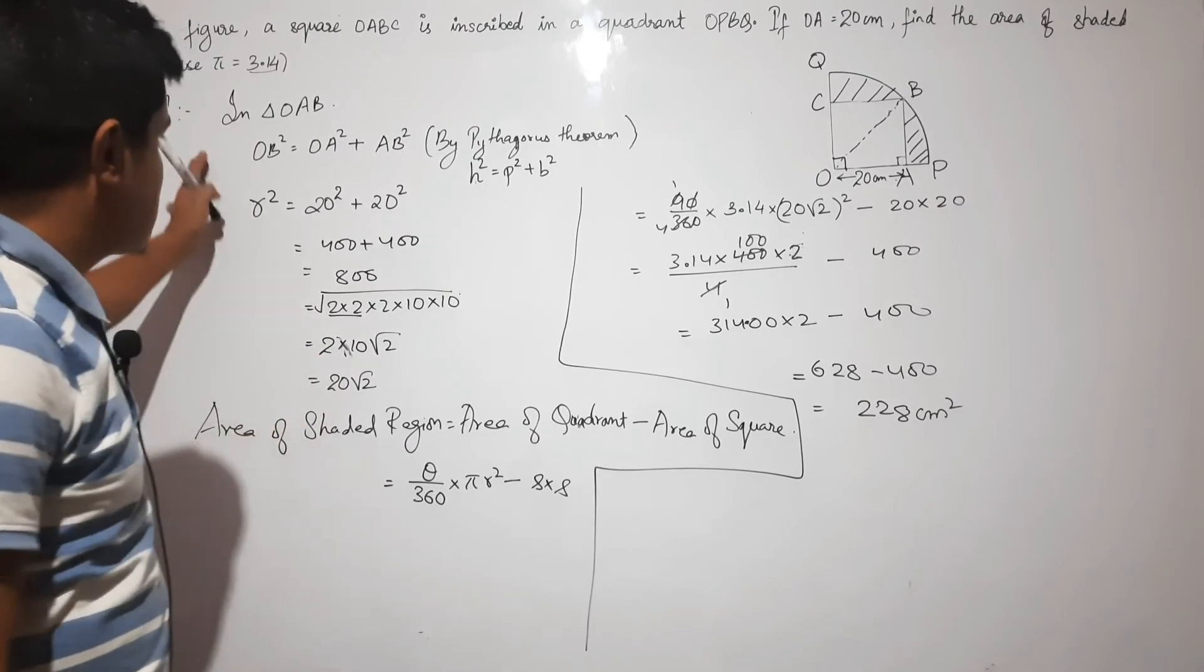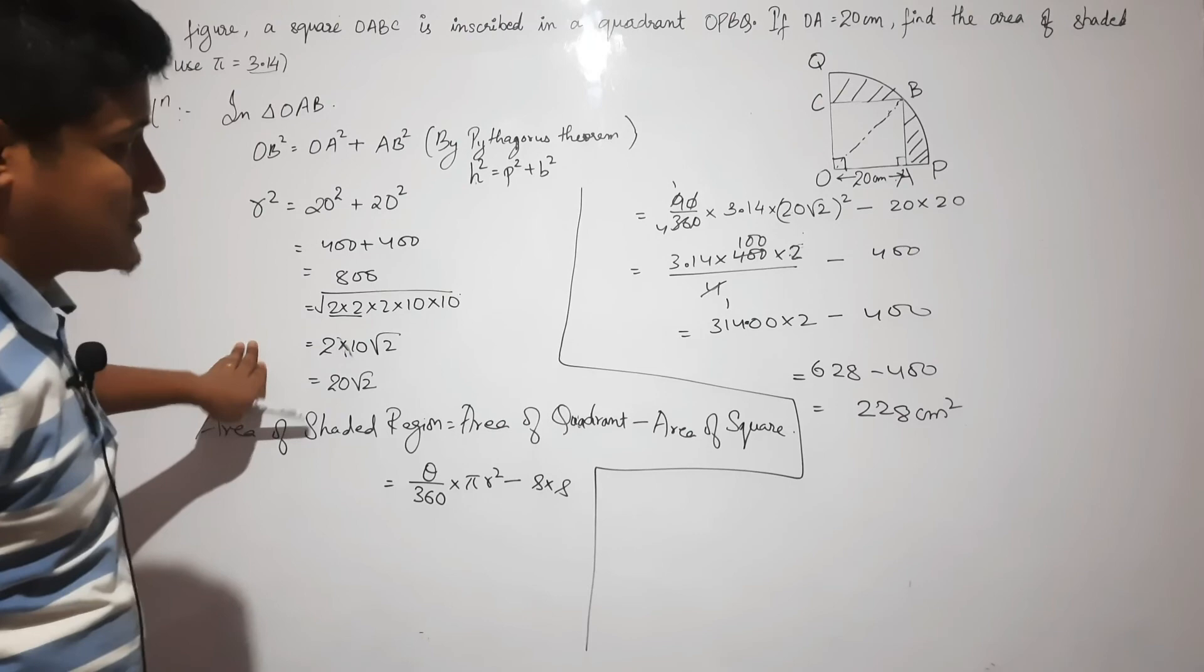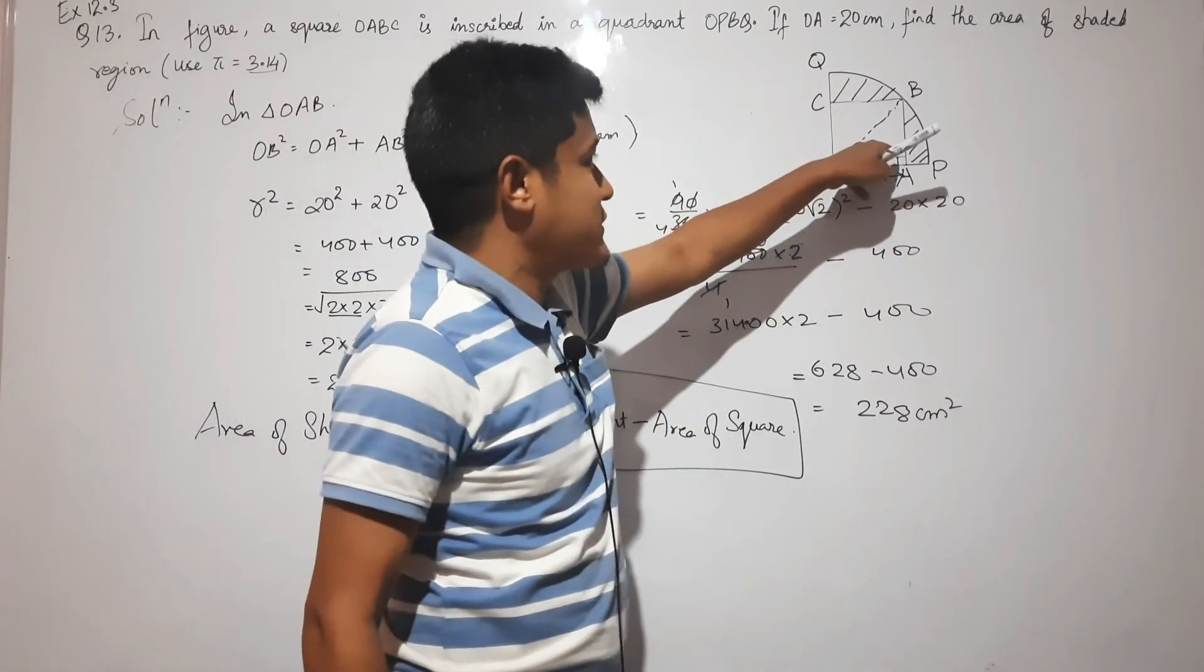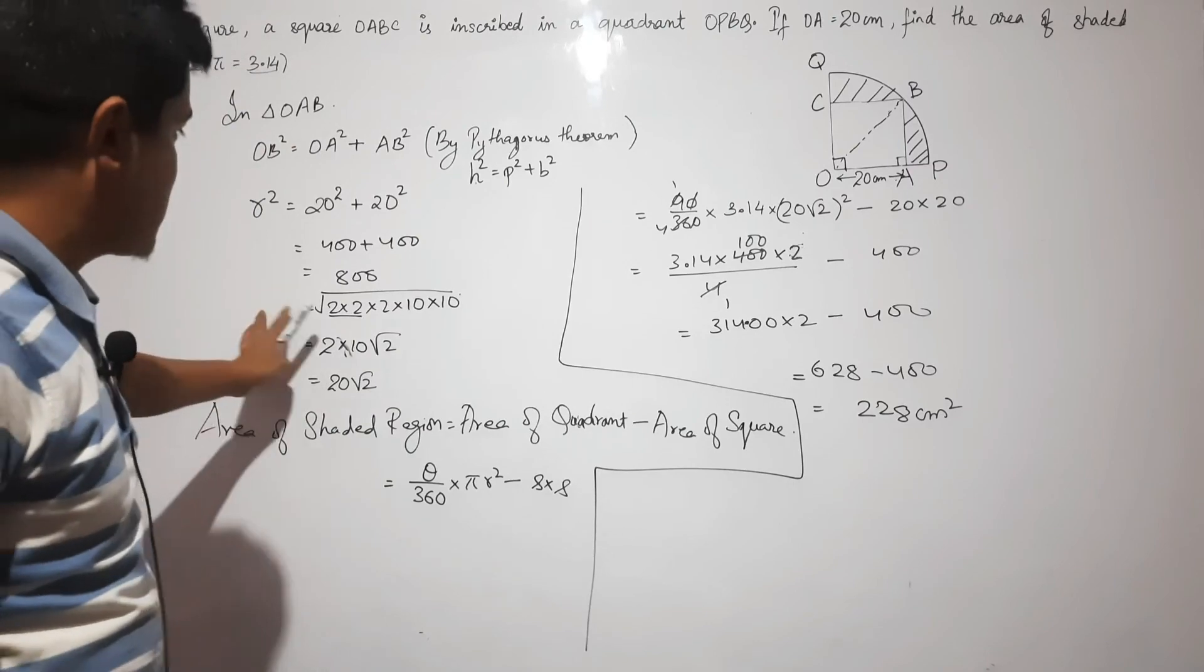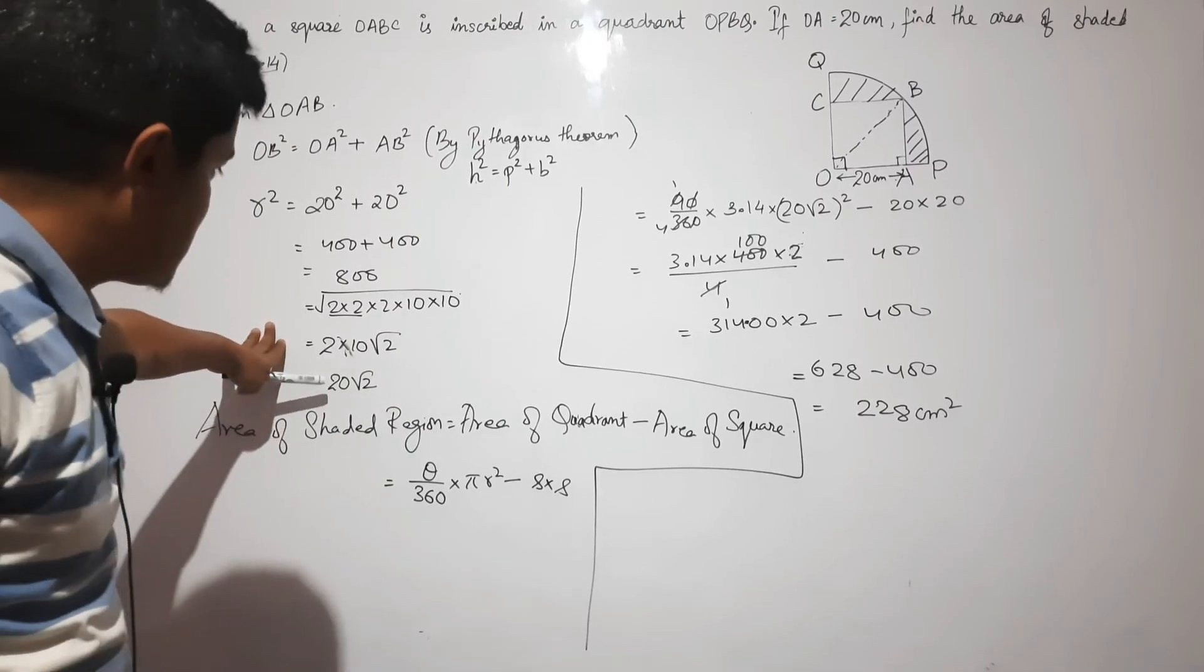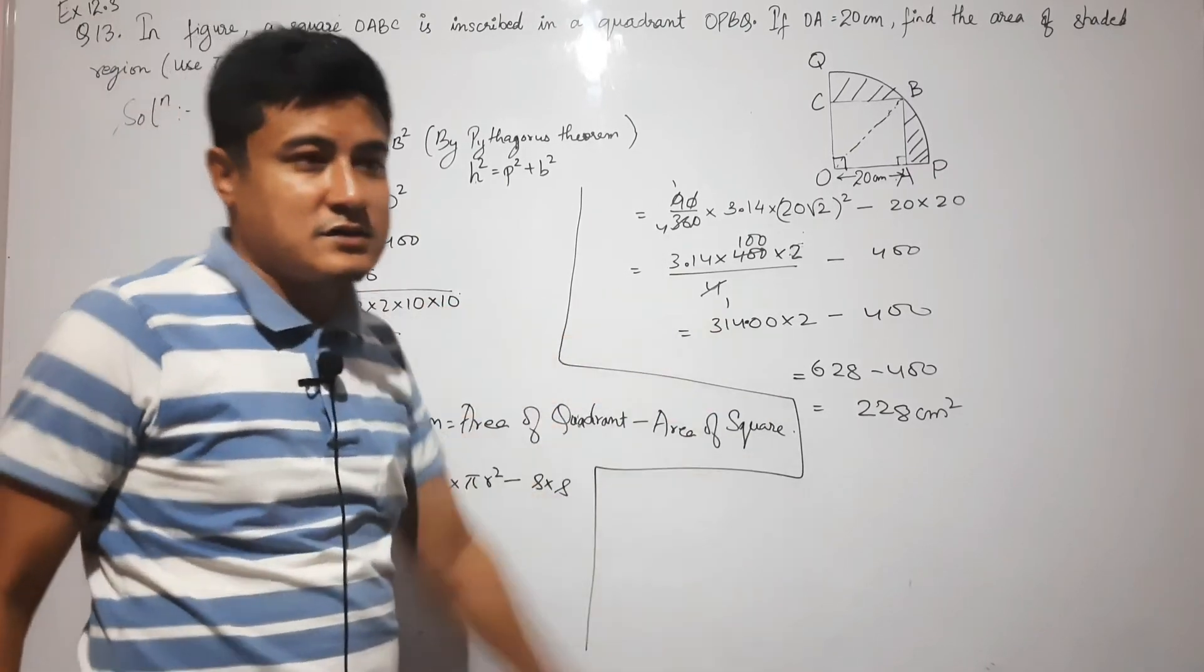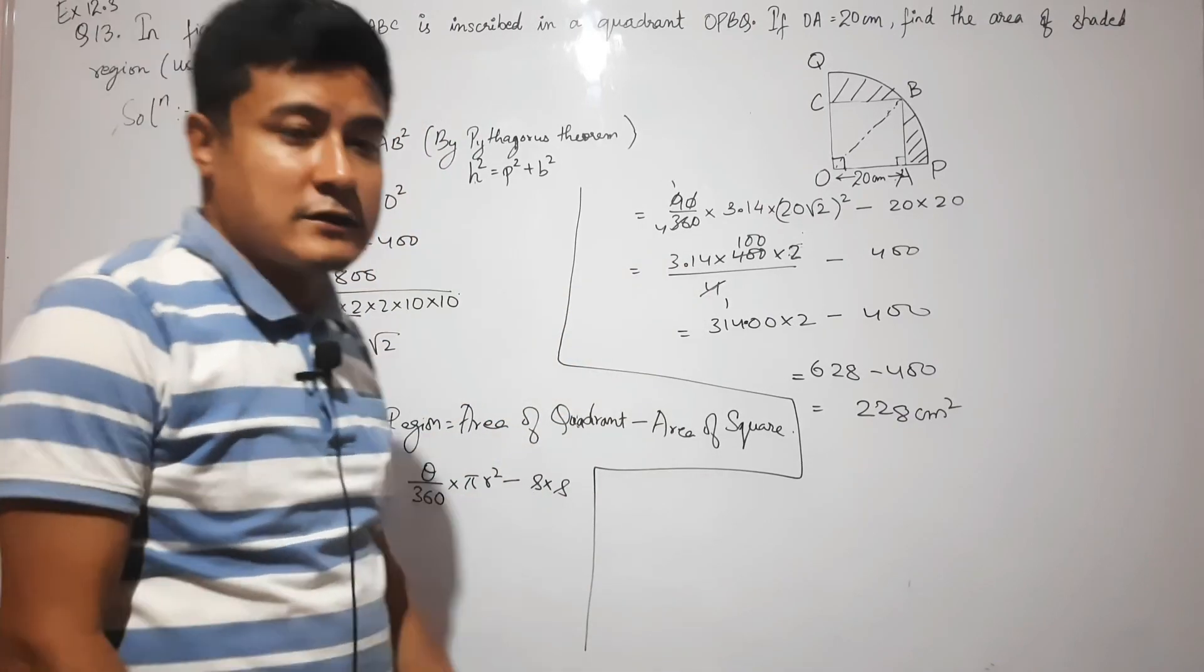So the main part of this question is finding the radius using the right angle triangle. If you come across this type of problem, this is the standard approach you use in all such questions. Thank you.